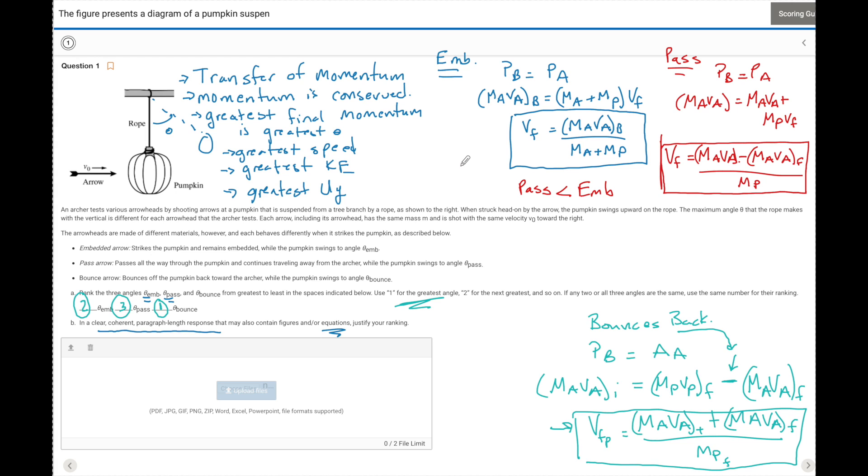And once again, think about the momentum absorbed by the pumpkin. When the arrow hits it and bounces back, greatest change in momentum is going to be the greatest momentum given to the pumpkin. When it gets embedded, the mass of the pumpkin and the mass of the arrow need to absorb all the energy, which is going to be transferred into some speed. But when it passes through, the pumpkin, yes, is going to take some momentum, but we need some momentum left for the arrow to pass through and continue to travel.